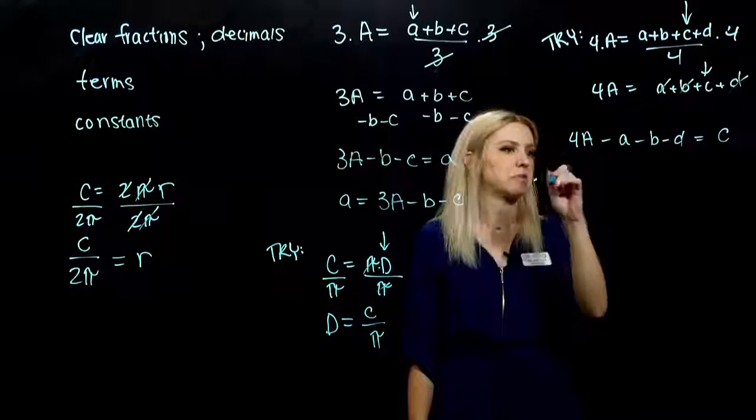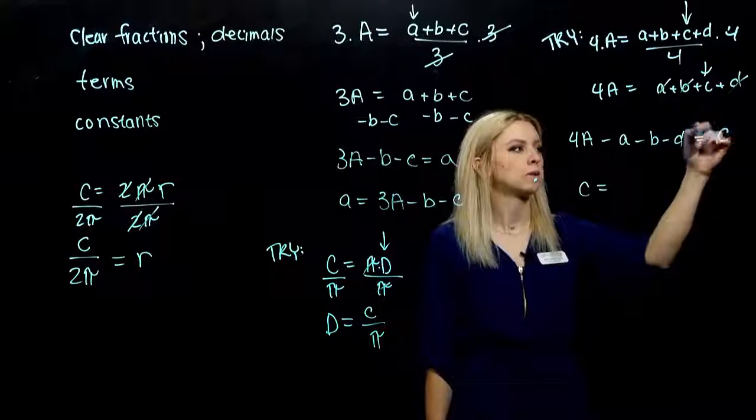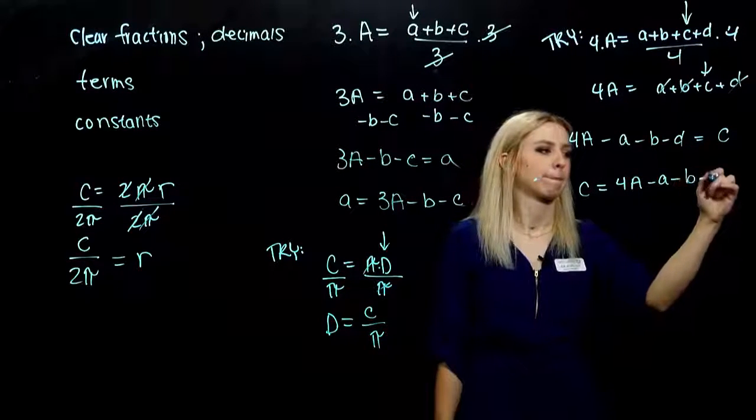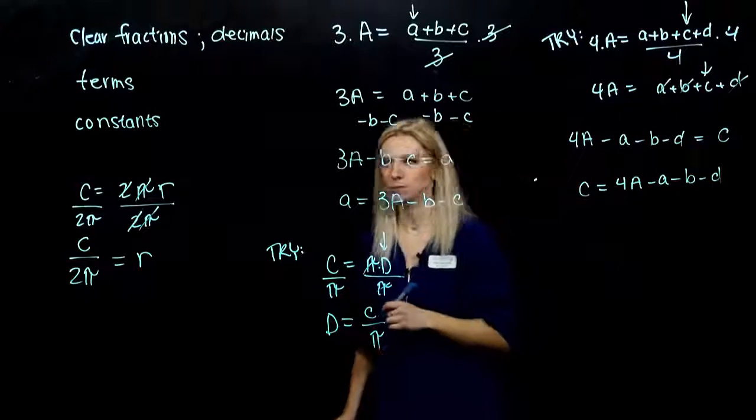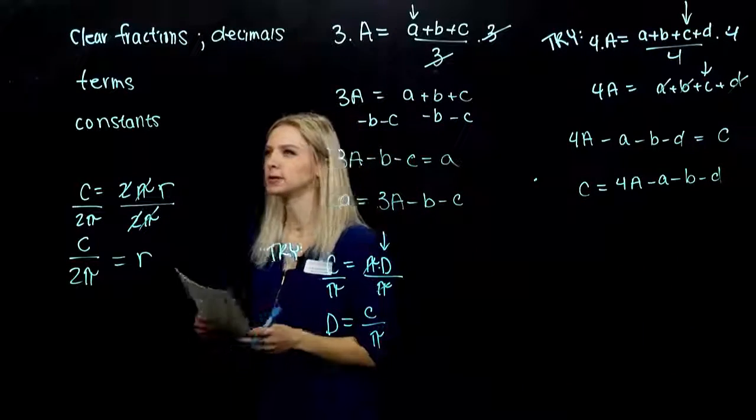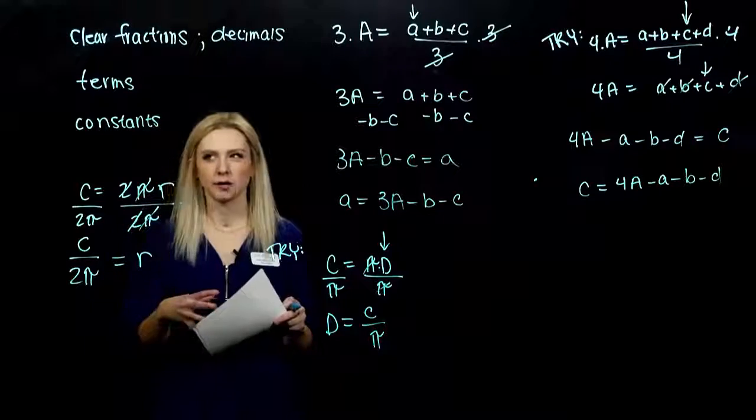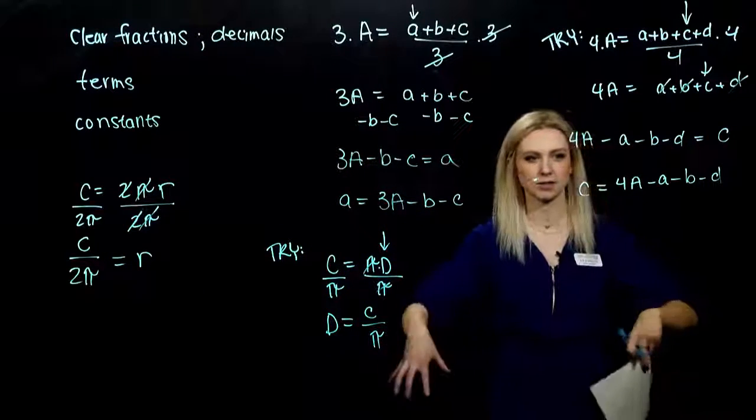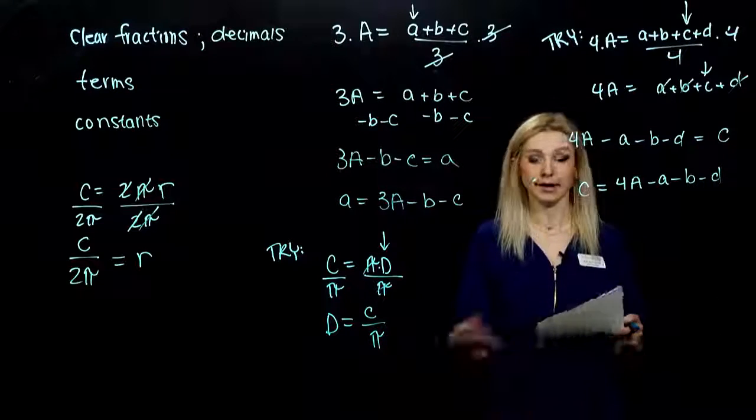And again, generally we like to see what we've solved for written first. So again, clear out fractions and decimals, combine like terms, then isolate the variable term, get the constants together and the variables together, isolate the variable.